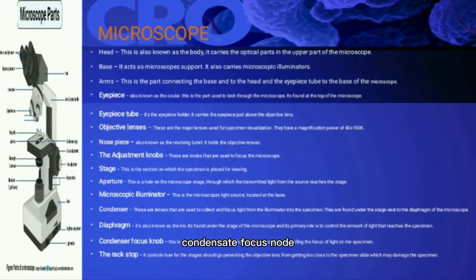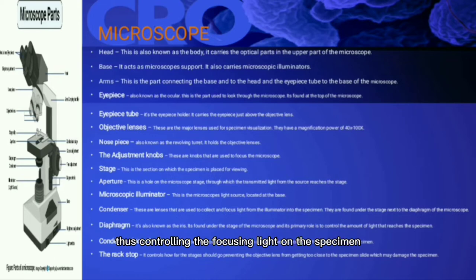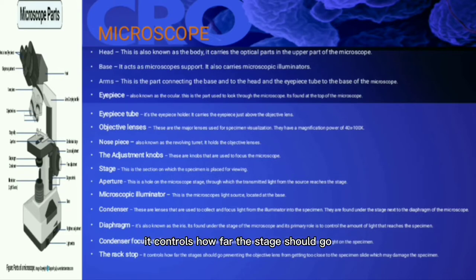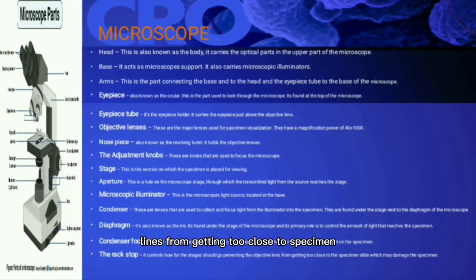Condenser focus knob — this is a knob that moves the condenser up or down, thus controlling the focusing of light on the specimen. Rack stop — it controls how far the stage should go, preventing the objective lens from getting too close to the specimen slide, which may damage the specimen.